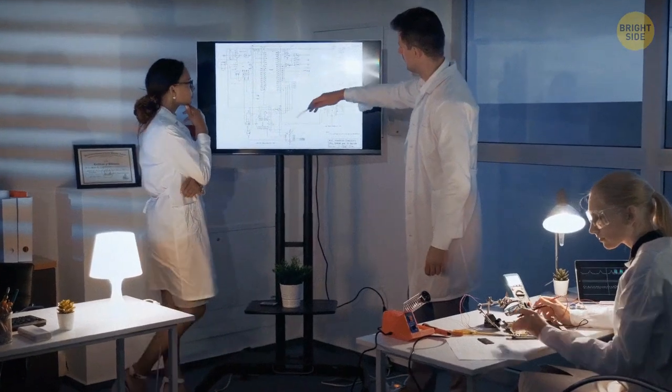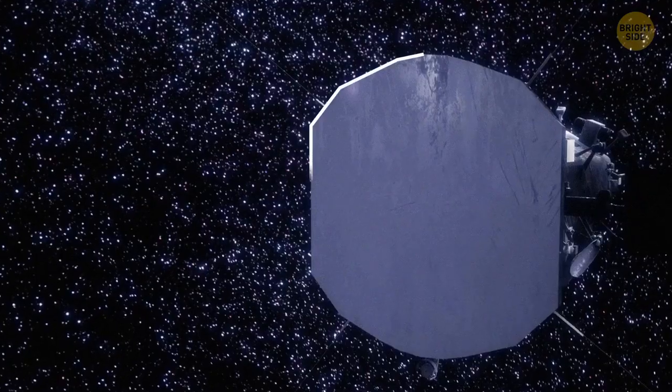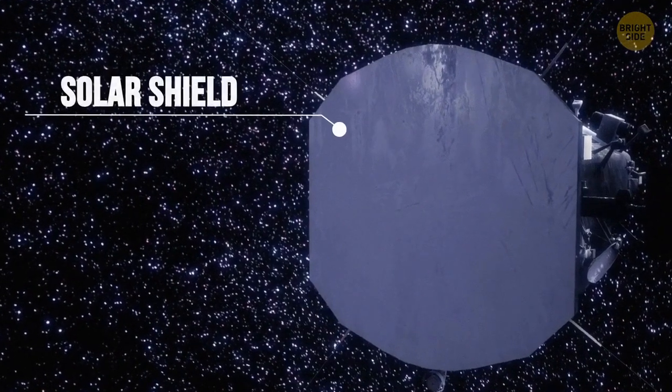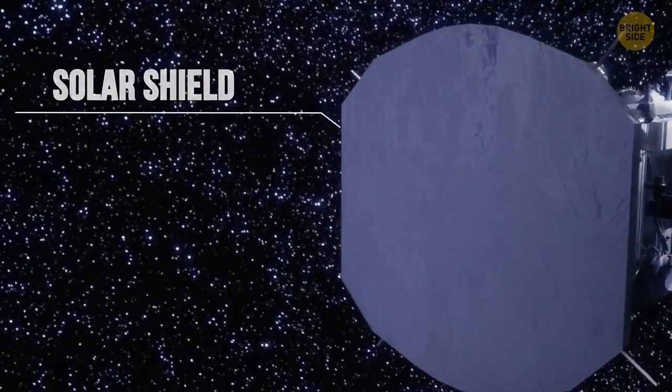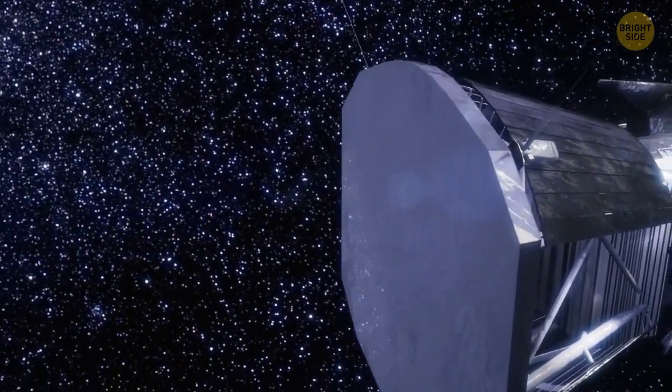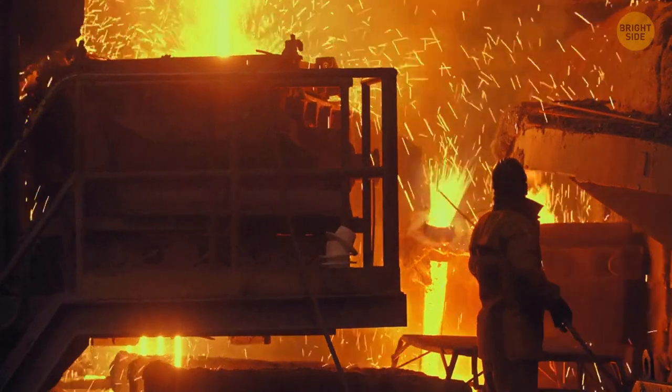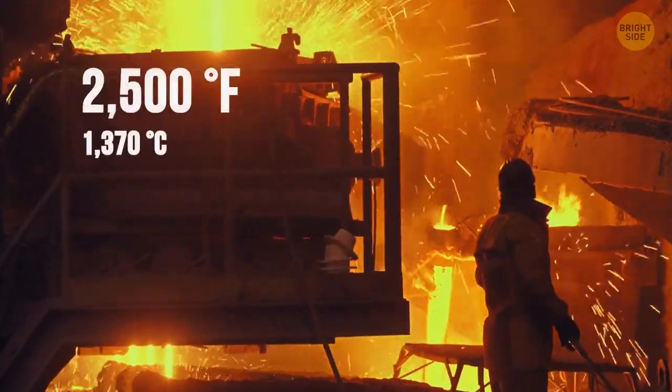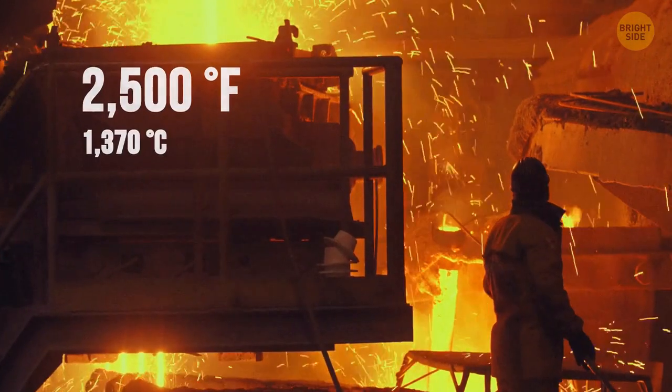Luckily, scientists have taken care of that. The probe has a solar shield. It's attached to the side of the probe that will face the star. It's about the size of a house window and about four and a half inches thick. It's made of a special material that can withstand a temperature of about 2,500 degrees Fahrenheit.